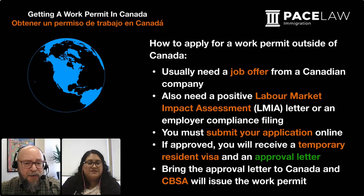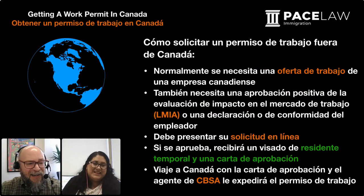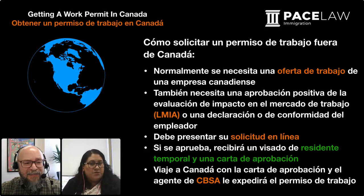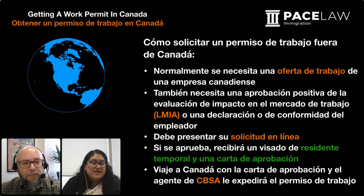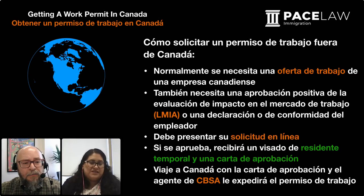Once you have the work permit, you are permitted to work immediately. Now let's go over to the Spanish version. Entonces, estábamos platicando de cómo solicitar un permiso de trabajo fuera de Canadá. Son los mismos requisitos: una oferta de trabajo de una empresa canadiense y la evaluación positiva del impacto de mercado laboral o la declaración de conformidad del empleador. Estos dos elementos son muy importantes. La aplicación se hace en línea y, una vez aprobada, se otorga una visa y la carta de aprobación. Con esos dos documentos, la persona viaja a Canadá y el oficial de servicios fronterizos le dará el permiso de trabajo en el aeropuerto, y va a poder trabajar en Canadá.